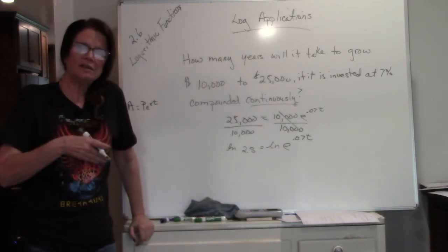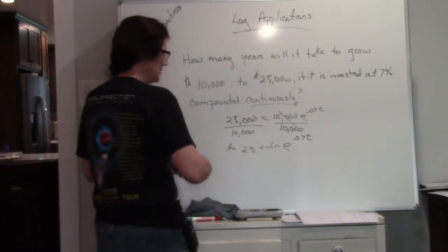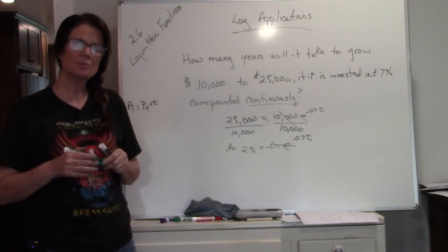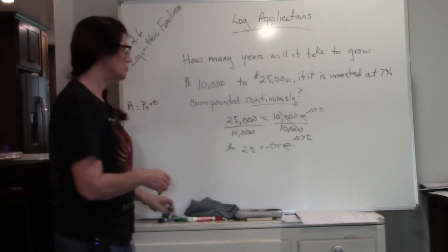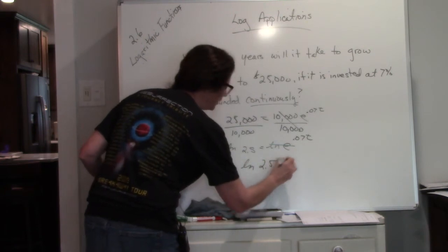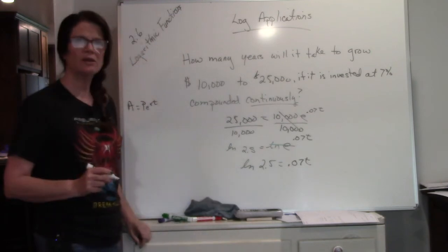When you LN an E, what that does is it cancels it because LN and E are inverse operations. They cancel each other. So what happens is I end up with LN of 2.5. This drops down and now I have a straight equation.